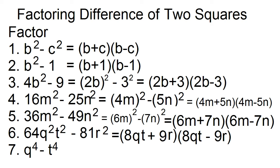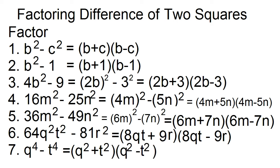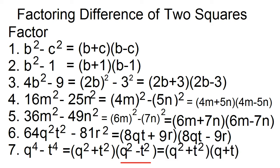Number seven: factor q to the power of 4 minus t to the power of 4. The square root of q to the power of 4 is q squared, and the square root of t to the power of 4 is t squared. The factors are q squared plus t squared and q squared minus t squared. Note that q squared minus t squared is also difference of two squares. The final factors are q squared plus t squared, q plus t, and q minus t.